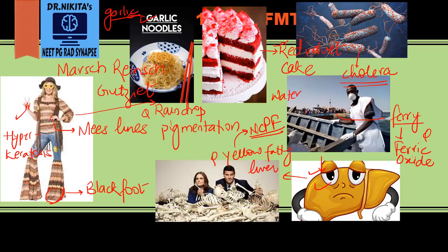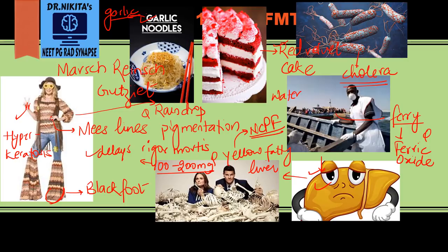With chronic ingestion of arsenic, finally she dies. The fatal dose is 100 to 200 milligrams. Arsenic also delays rigor mortis and putrefaction, so delay in putrefaction is a notable feature of arsenic poisoning.